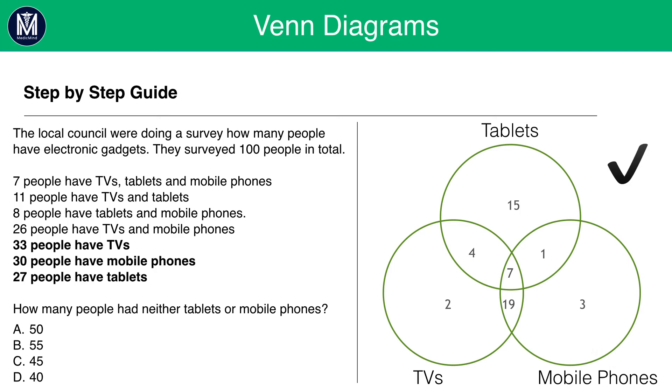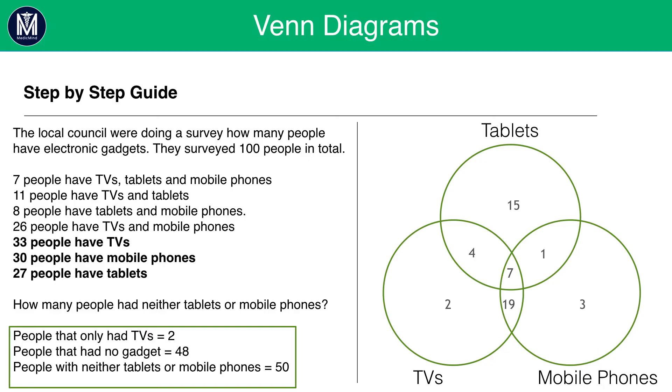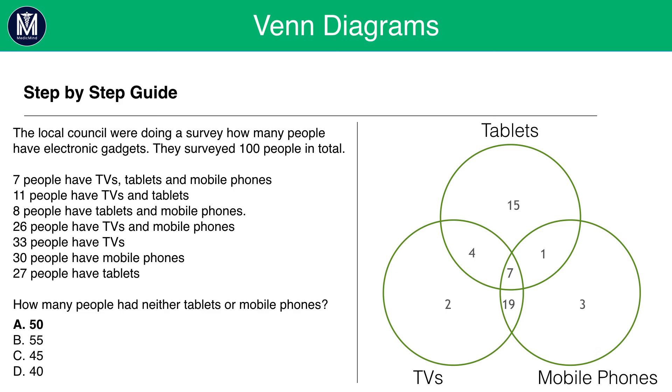Now, you might think, oh I can just add them all up and take away from 100 to find out the number of people that didn't have tablets and mobile phones. But it's not as easy as that. We need to consider the fact that there are people that have no gadgets. So, to work this out, we need to work out the number of people with at least one gadget. So, if we add all the numbers up in this Venn diagram, it becomes 52. So, you take away 100 from 52, meaning there are 48 people that have no gadget. So, the next step many people fall short on. We're working out the people that have neither tablets or mobile phones. Okay? We need to think about the people that only had TVs because those who only had TVs did not have tablets and did not have mobile phones. That's two people. And we add that on to the people that had no gadgets and that gives us 48. Therefore, the people with neither tablets nor mobile phones is 50. Therefore, the answer is A. 50.